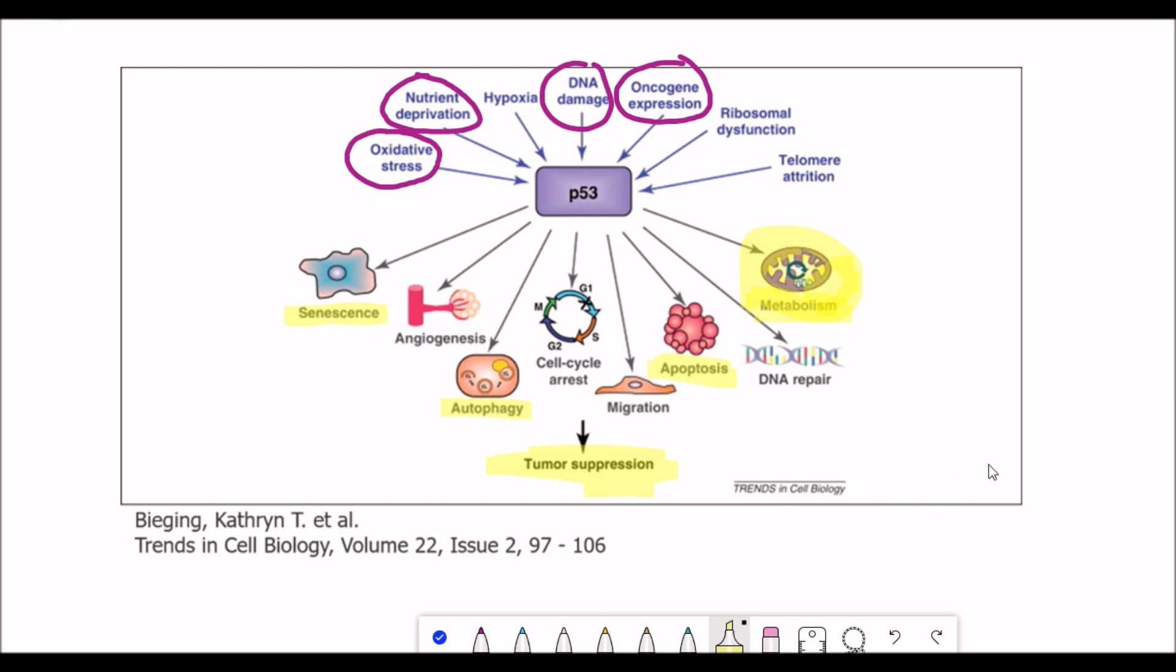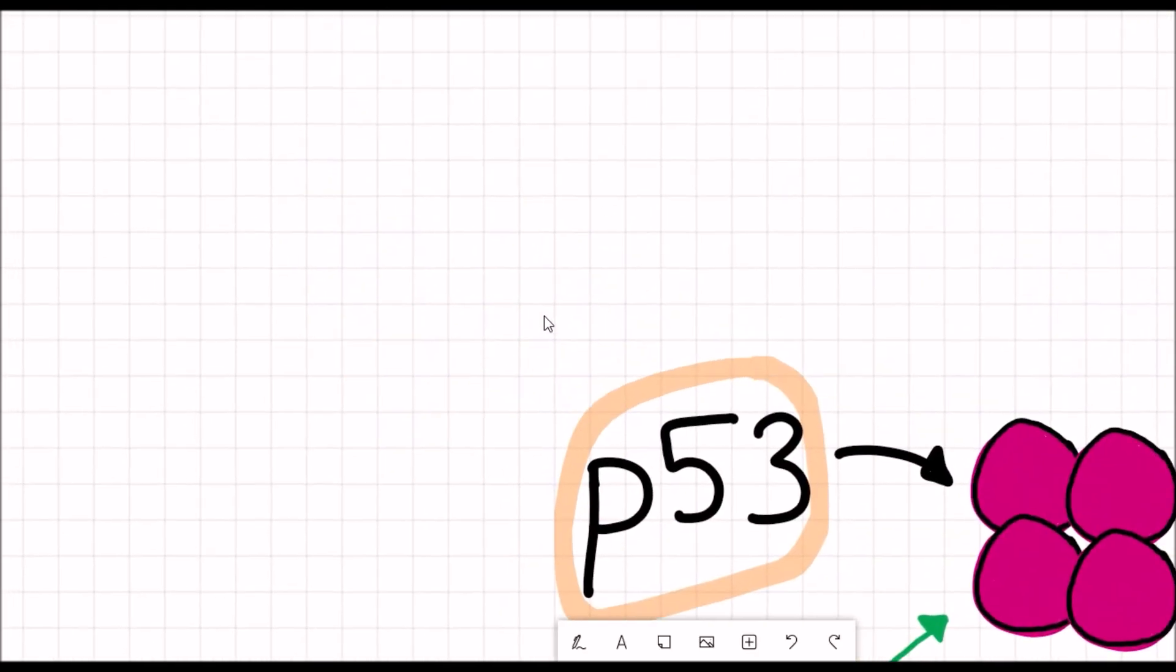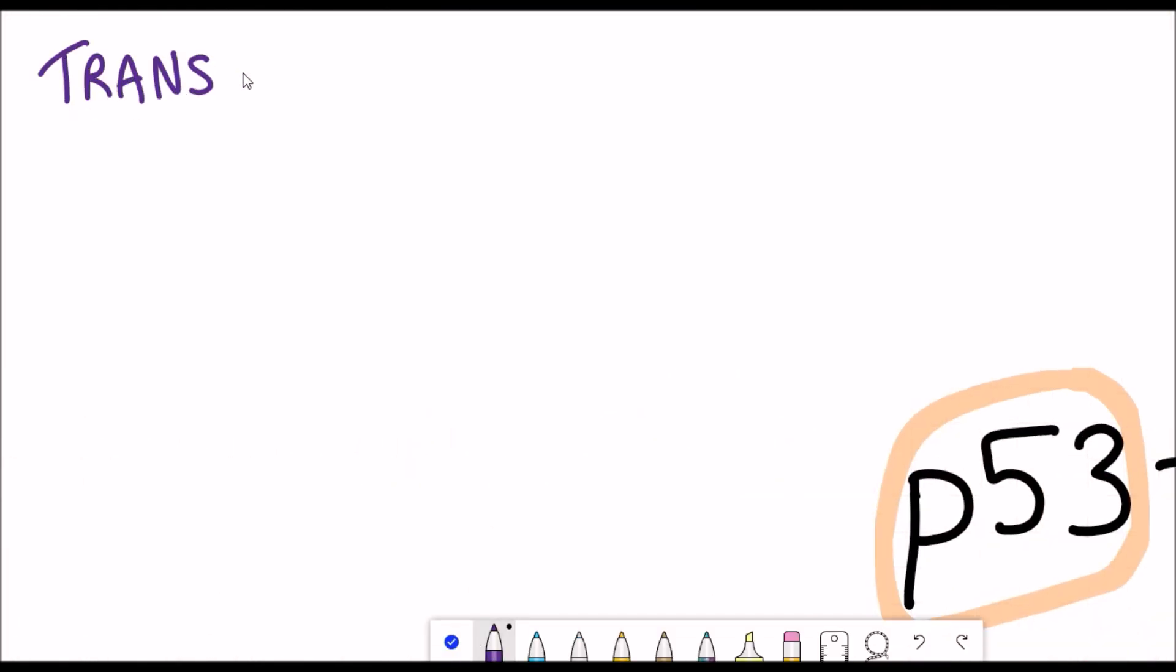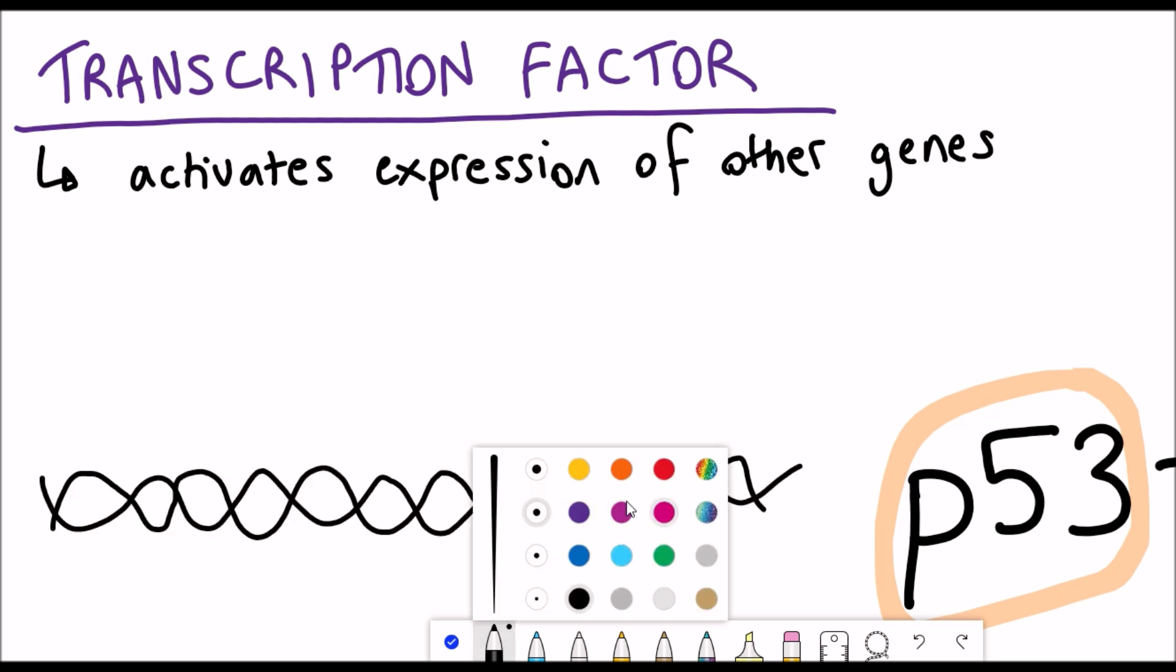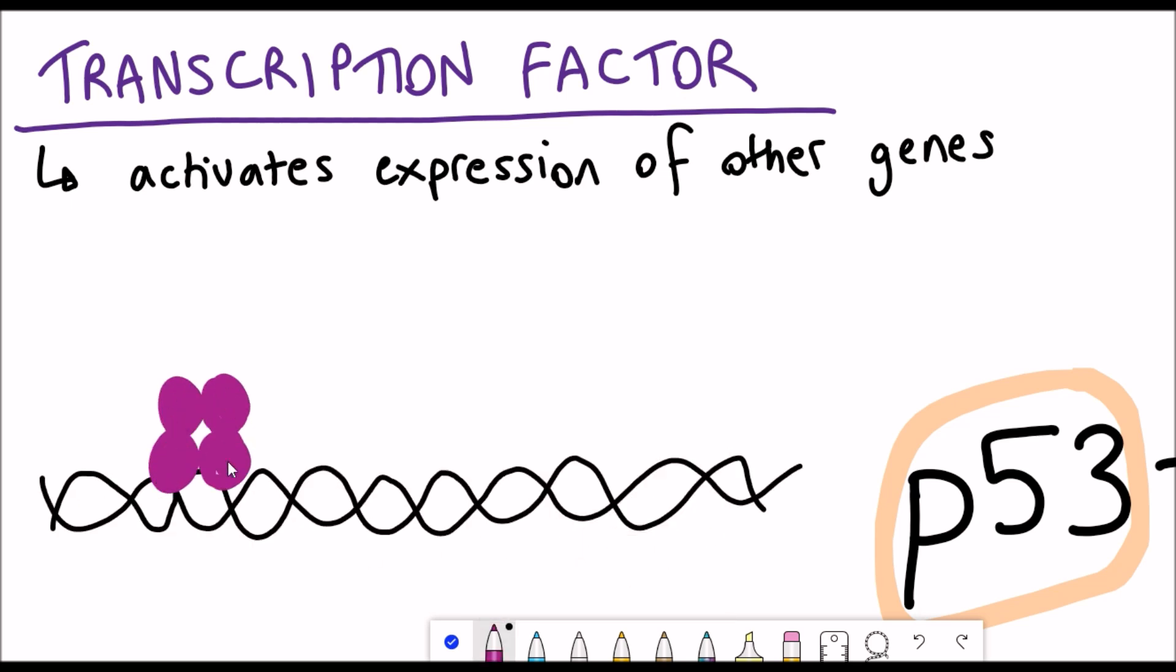So how does it achieve these different responses? Well p53 is a transcription factor, so what that means is it can bind to DNA and activate the expression of lots of different genes. The way by which p53 does this is by binding DNA as a tetramer.